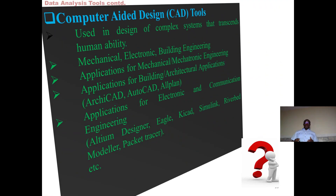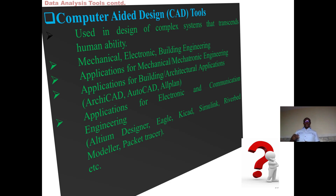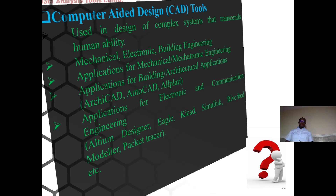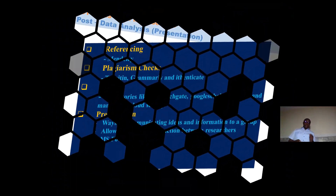If you are into engineering, you may have to go for computer-aided design tools. For instance, you can use ArchiCAD or AutoCAD if you are into building or architectural applications. If you are into electronic and communications engineering, you may need Altium Designer, Eagle, KiCad, Simulink, Riverbed Modeler, or Packet Tracer. You have to be conversant with some of these to be relevant.